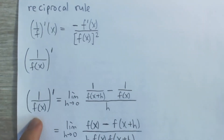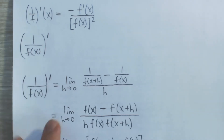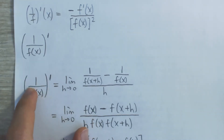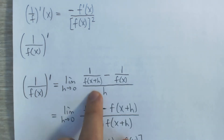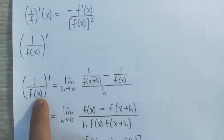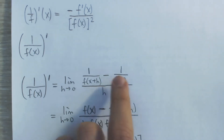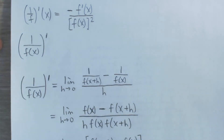The derivative of 1 over f of x is equal to the limit as h approaches 0 of the function evaluated at x plus h — in other words, 1 over f of x plus h — minus the original function, 1 over f of x, all over h.